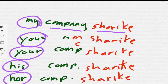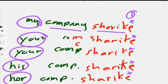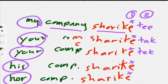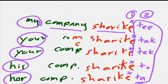With 'I,' delete the feminine case and add 'ti' — so 'shariqati' means 'my company.' For masculine 'you,' add 'tak' — 'shariqatak.' For feminine 'you,' add 'tak' (different voweling). For 'his,' add 'ta.' For 'her,' add 'ta.' So the suffixes added to a feminine noun are: 'ti' (my), 'tak' (your male), 'tak' (your female), 'to' (his), and 'ta' (her).